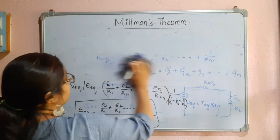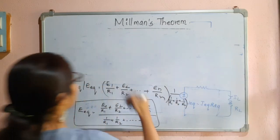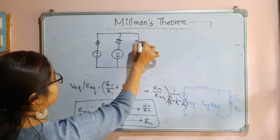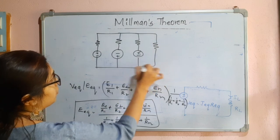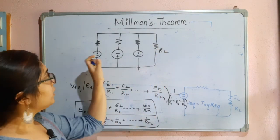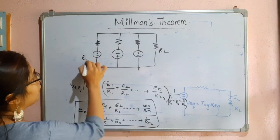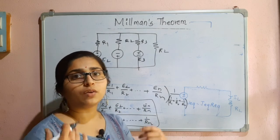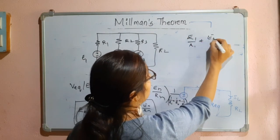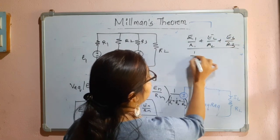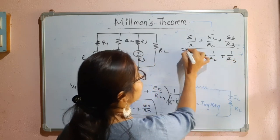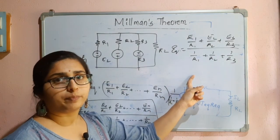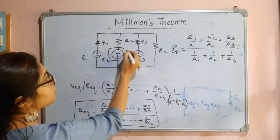Case 2: You may encounter a circuit where some voltage sources have opposite polarities. If you see voltage sources in parallel and directly apply E1/R1 + E2/R2 + E3/R3 divided by 1/R1 + 1/R2 + 1/R3 for E_equivalent, this will fetch you the wrong answer. Why? Because the polarity of one of the voltage sources is opposite, which changes the sign of the corresponding term.